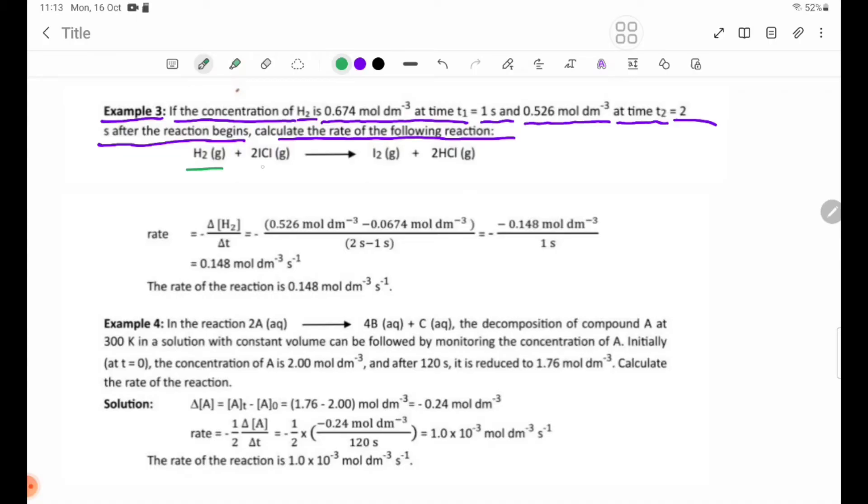The reaction is H2(g) + 2ICl(g) → I2(g) + 2HCl(g). The rate for hydrogen gas is rate = -Δ[H2]/Δt.